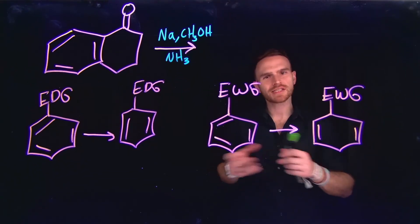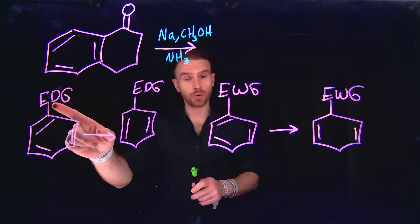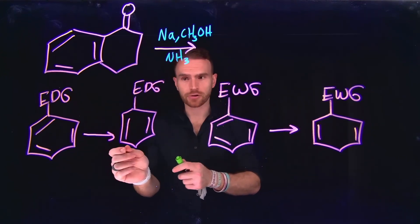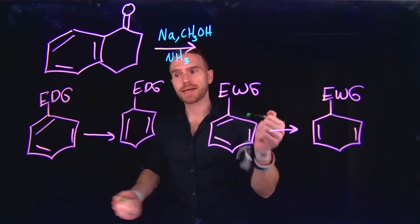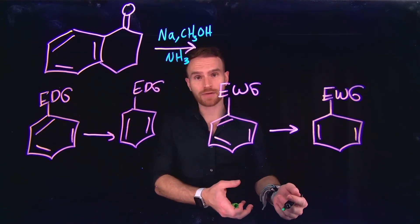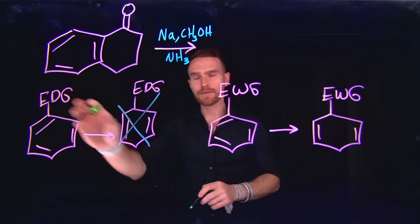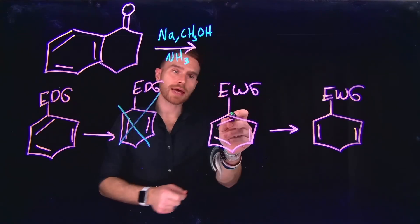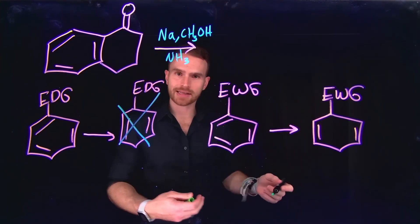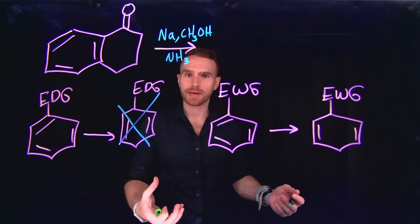For the Birch reduction question, we need to talk about an important concept: whether or not substituents on the benzene ring are electron-donating groups or electron-withdrawing groups. We need to consider these factors when discerning whether or not a Birch reduction can actually occur. It turns out that electron-donating groups destabilize the radical anion that's formed as an intermediate during a Birch reduction. Therefore, we typically do not see reduction of benzene if there is an electron-donating substituent. However, when we have an electron-withdrawing group, we do see reduction at the carbons that are connected to that electron-withdrawing group, due to the stabilization of the radical anion formed as part of that mechanism.